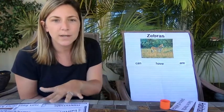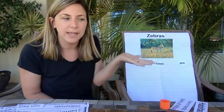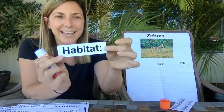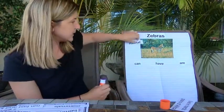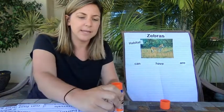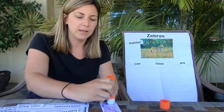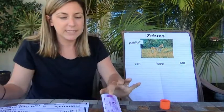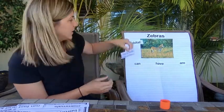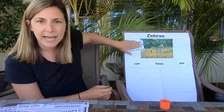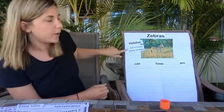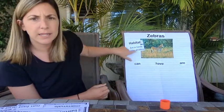The first important thing to learn about zebras is where they live — that's called an animal's habitat. Can you say habitat? Habitat. So an animal's habitat is where they live. Zebras live in the plains of Africa, like the other animals we've studied, and they live in groups called herds. So I put 'live in herds, plains of Africa.'